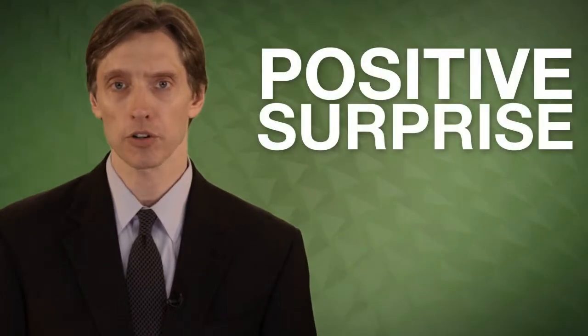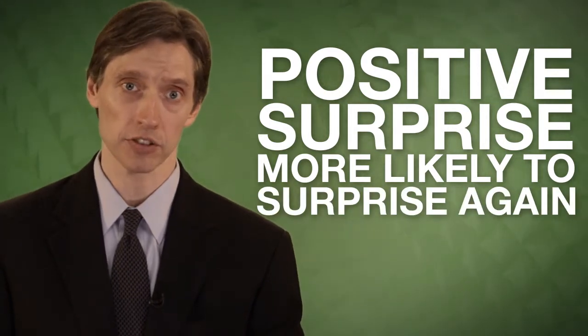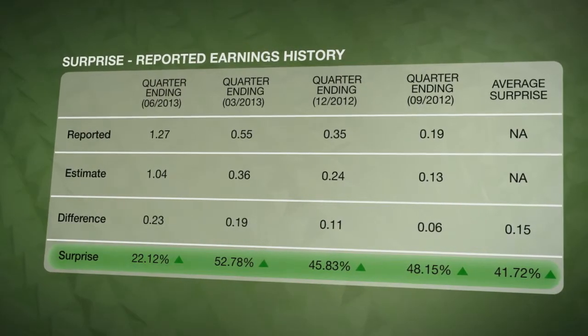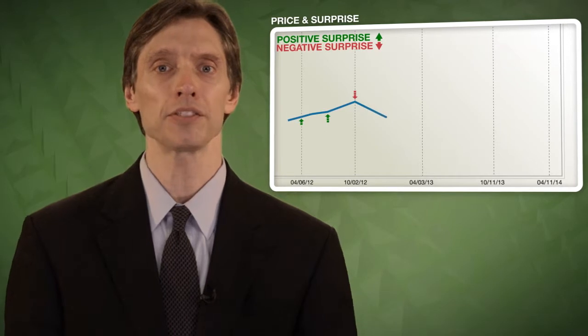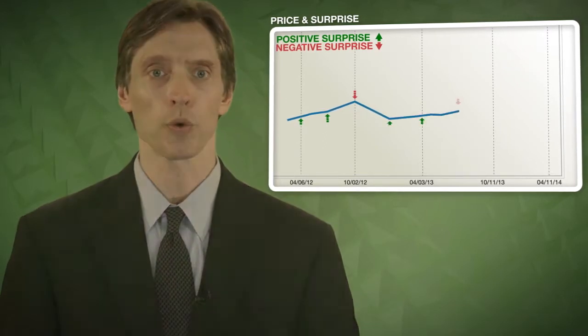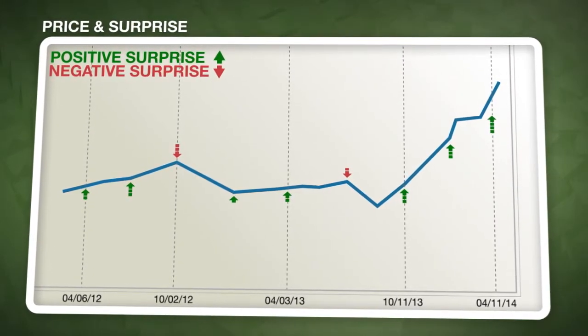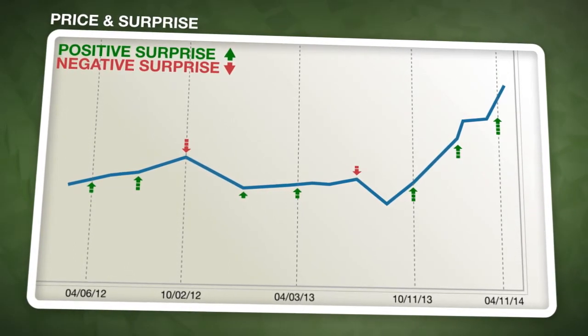The surprise factor looks at the last few quarters of earnings surprises. Companies with a positive earnings surprise are more likely to surprise again in the future, or miss again if they recently missed. Looking at a company's recent surprise history can be a great aid in forecasting the surprise likelihood of their next outing. You can also see the surprise history by looking at the price and surprise chart, which uses red and green arrows to depict the company's surprises. A visual scan of this chart can quickly orient you on a company's ability to surprise in the past and their likelihood of doing it again.